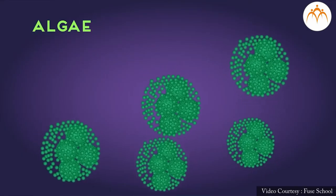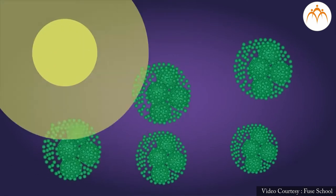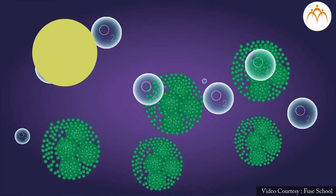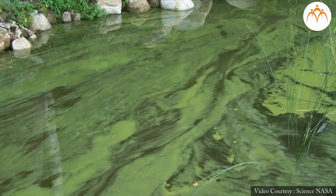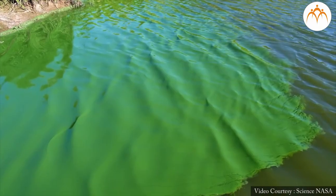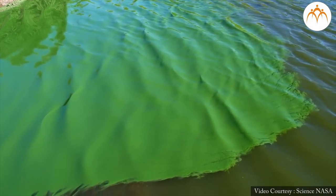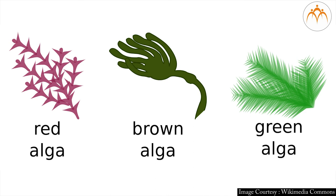Algae: This group includes eukaryotic microorganisms which are mostly multicellular, though few are unicellular. They have an aquatic habitat and occur in both freshwater and saltwater bodies. Some multicellular forms create large masses of growth and can be seen as floating mat-like or freely moving sheets in lakes and oceans. All algae are photosynthetic. Algae belong to kingdom Plantae according to Whittaker's five-kingdom classification system, though some are now also classified as belonging to kingdom Protista. Some examples of algae are depicted in this picture.